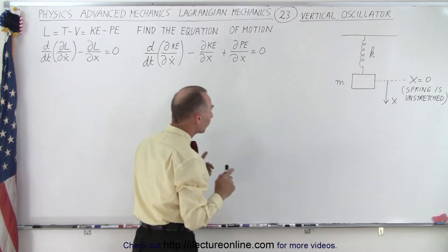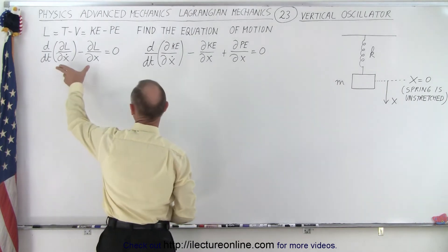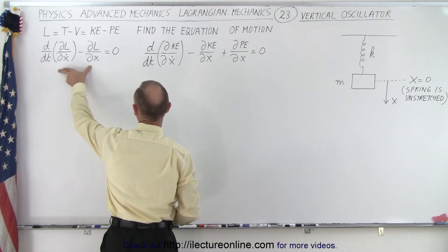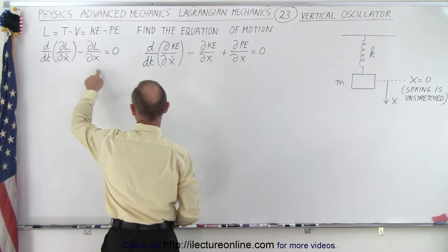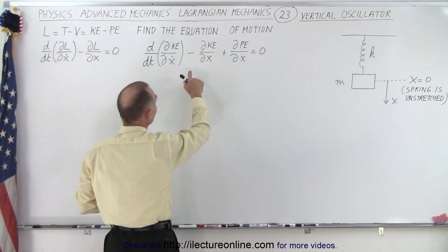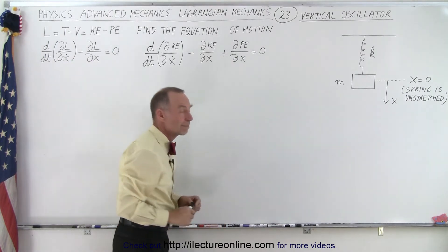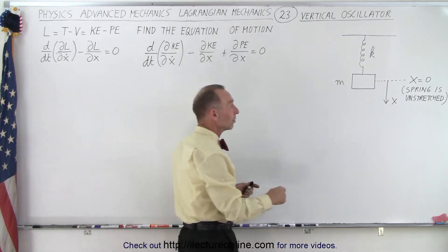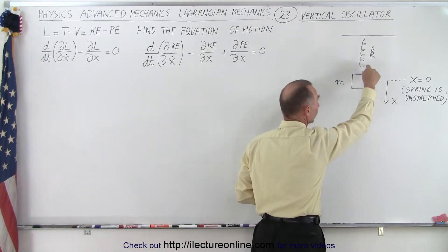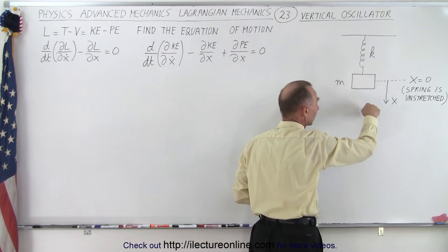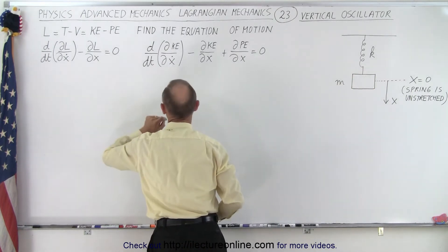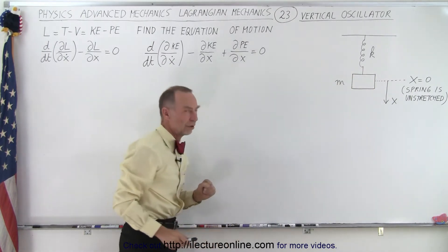If we're going to solve the problem that way, instead of using our typical equation where we solve for the Lagrangian and go through the operation, we need to write the equation like this. In the case where the spring is stretched and there's a balance between the force of the spring and the force of gravity, we would use that equation. So instead we're going to use this equation.